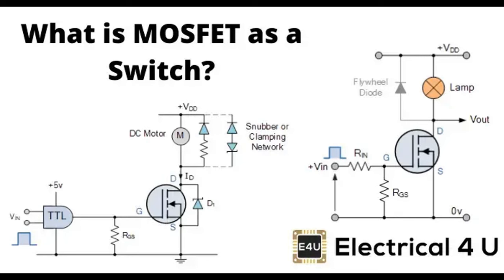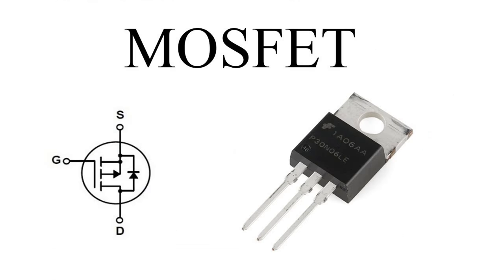MOSFETs are often used in the amplification stages of electronic circuits that precede modulation. Before a signal is modulated onto a carrier wave, it is typically amplified to ensure sufficient strength for transmission. MOSFETs can also be part of mixer circuits that combine the input signal with a carrier signal, generating sum and difference frequencies to facilitate frequency modulation, FM, or amplitude modulation, AM, in communication systems.